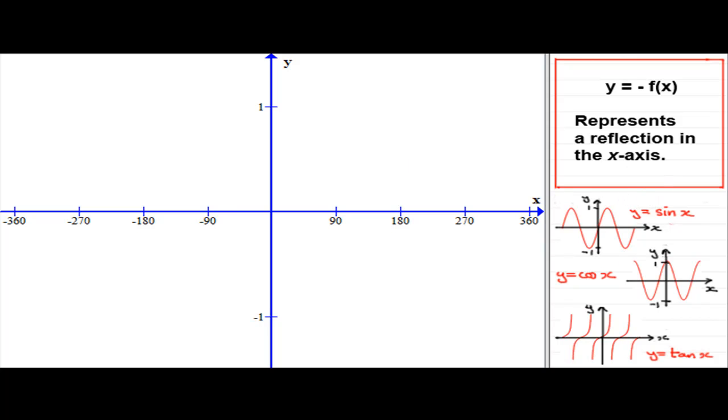So first of all, we'll start off with this particular one: y equals f of x where f of x equals sin x. If we're to do this transformation, minus f of x, it means that we need to multiply f of x by negative 1. So we're going to get y equals minus f of x, which equals minus sin x.